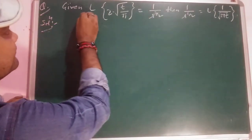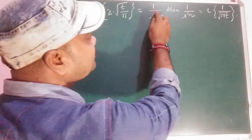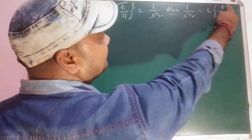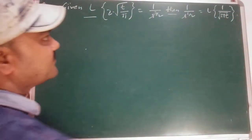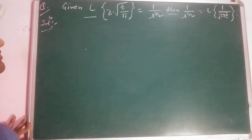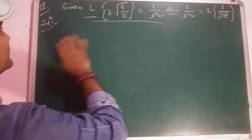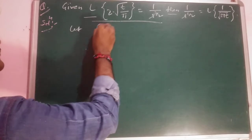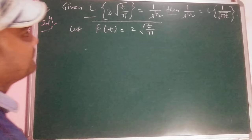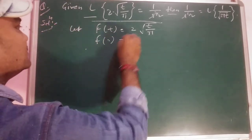Here is another question. Given: L{2√t/π} = 1/s^(3/2), then we have to show that 1/s^(1/2) = L{1/√(πt)}. Note that one involves s^(1/2) and the other s^(3/2). In such questions, we let f(t) = 2√t/π.